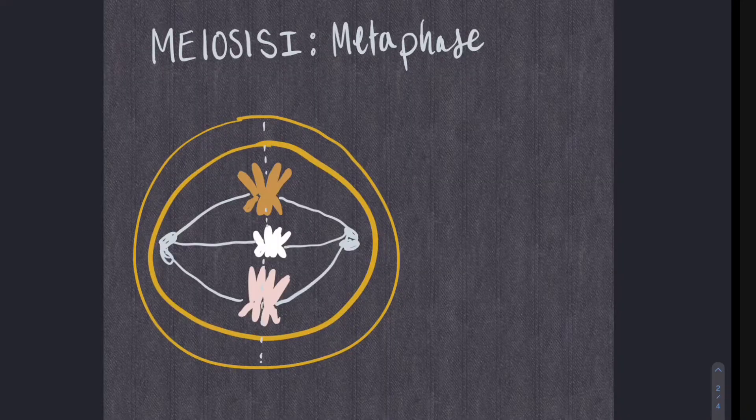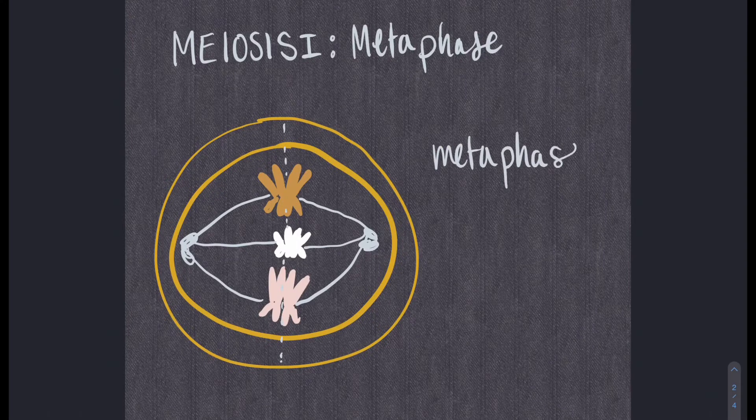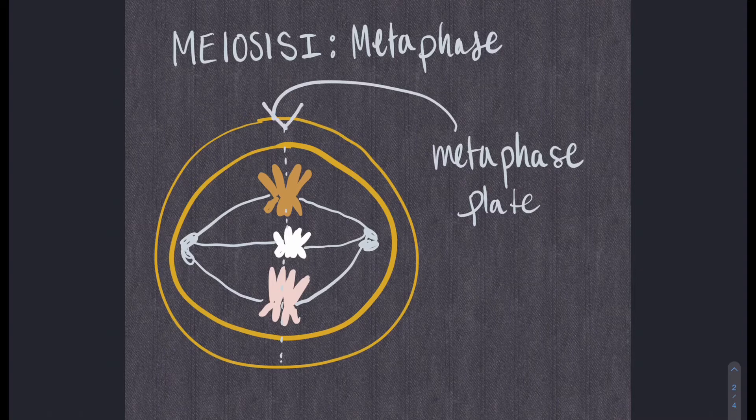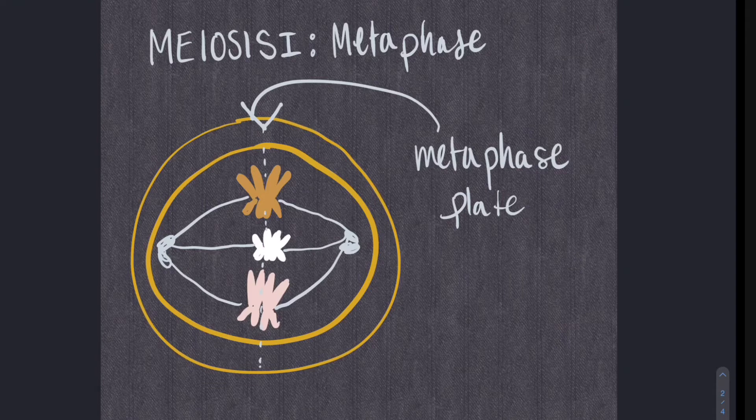The next stage is metaphase I. Microtubules align the tetrads at the metaphase plate. I like to think that the tetrads meet in the middle at the metaphase plate for some alliteration. This just assures that each daughter cell gets one of each pair of homologous chromosomes.